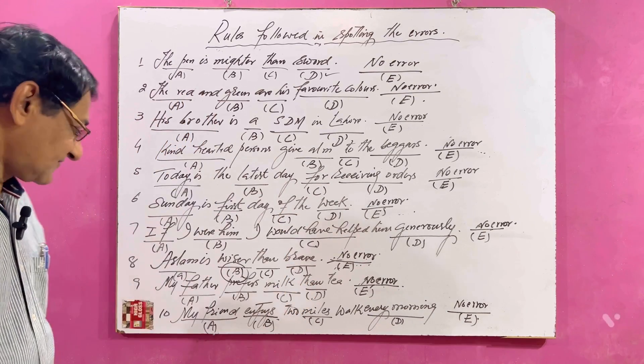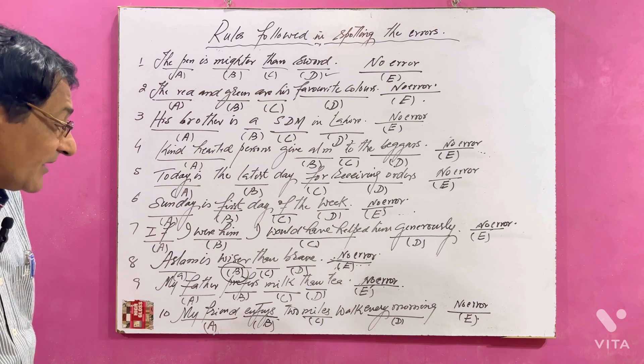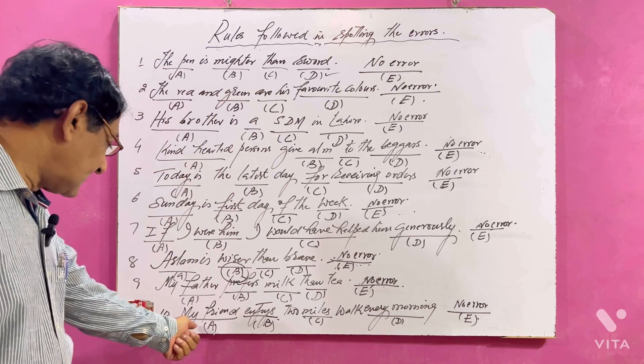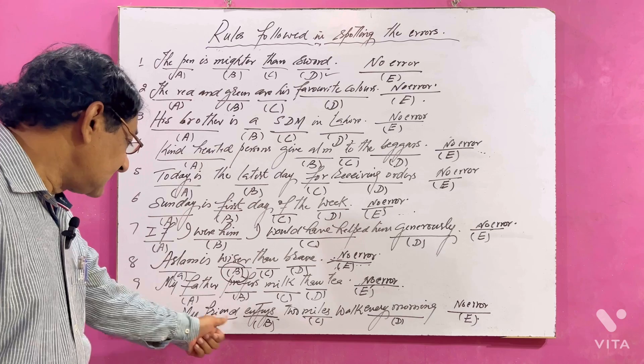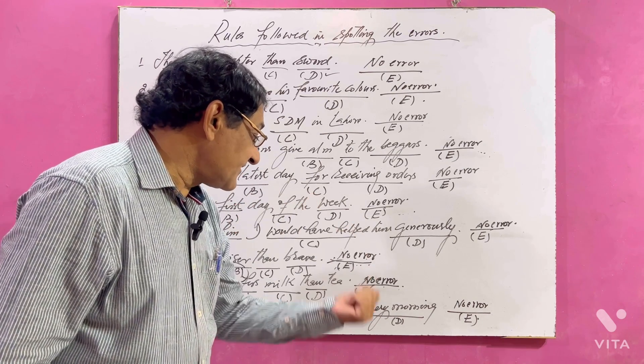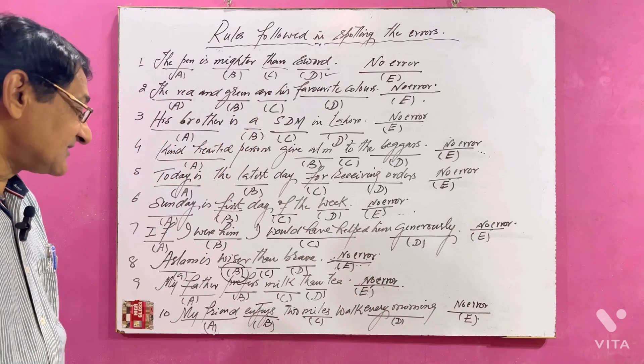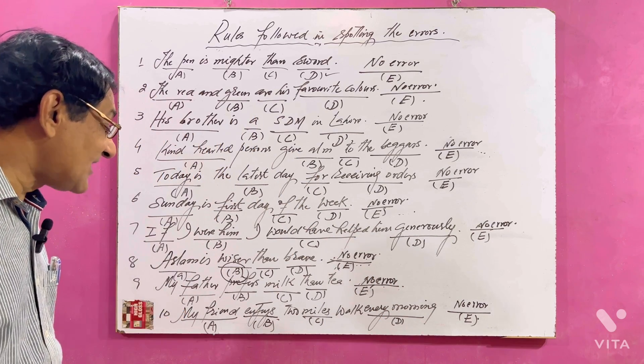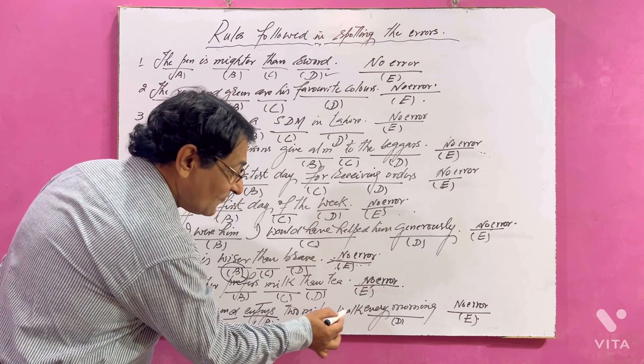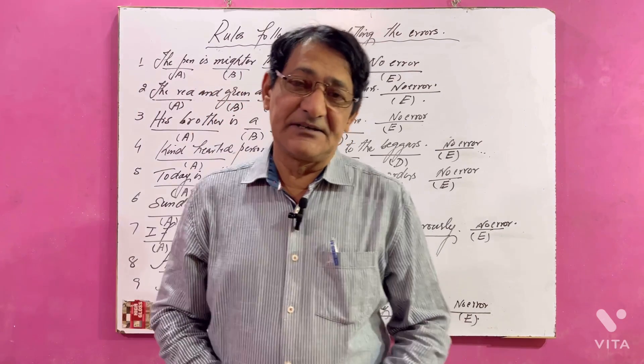Number ten: My friend enjoys two miles walk every morning. Where is the error? My friend enjoys two miles walk every morning. Yes, there's error. My friend enjoys two mile, not miles - two mile walk every morning. Thank you for watching my video, like it, share it.